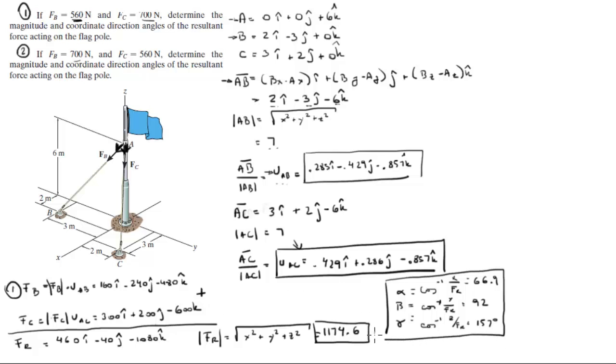And this is for the first one. Let me draw a line right here. So now we're going to do the second one right here. F of B is calculated in this manner, just F of B times UAB, which we calculated right here. But this time we're going to use a different magnitude, which is 700. So F of B comes out to be 200i minus 300j minus 600k.